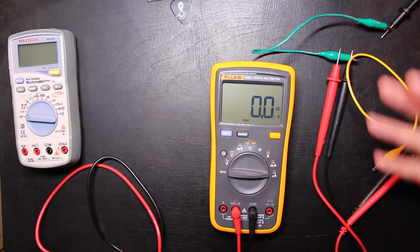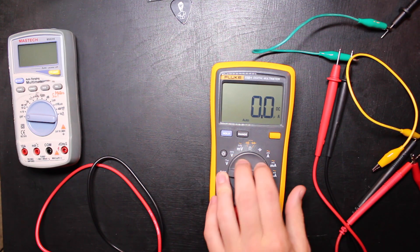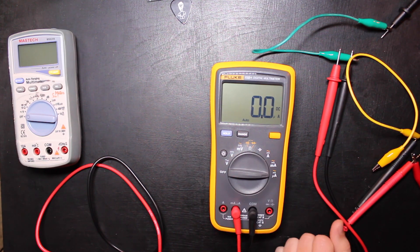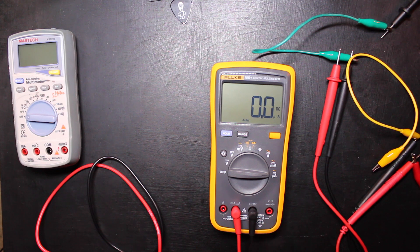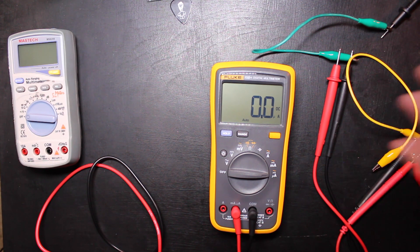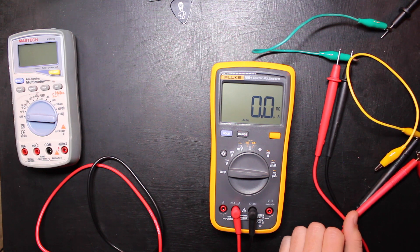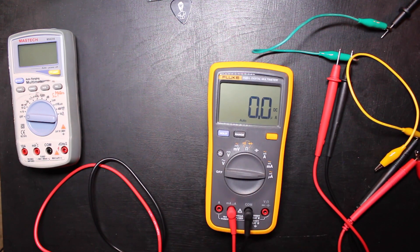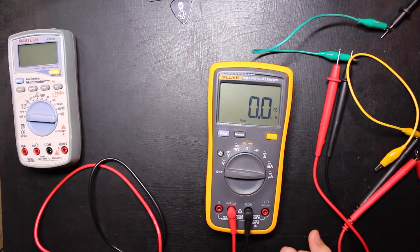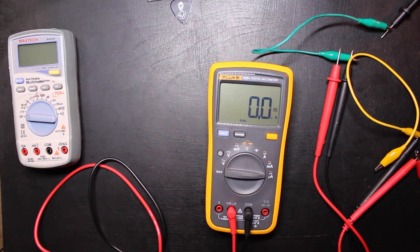So you know, there you have it—an $80 Fluke that's keeping up with my Keithley 2000 there. So I'm really impressed, this is definitely going to be my new go-to meter that I carry around in my bag. So there you go, little tip there for you. Thanks for watching.